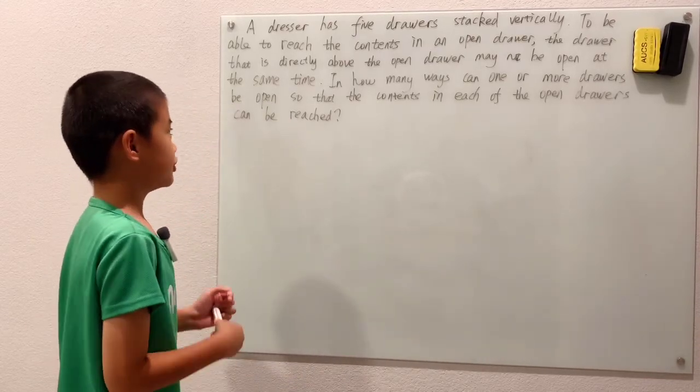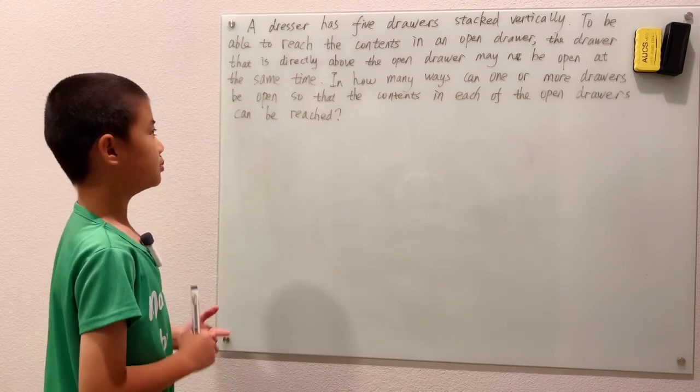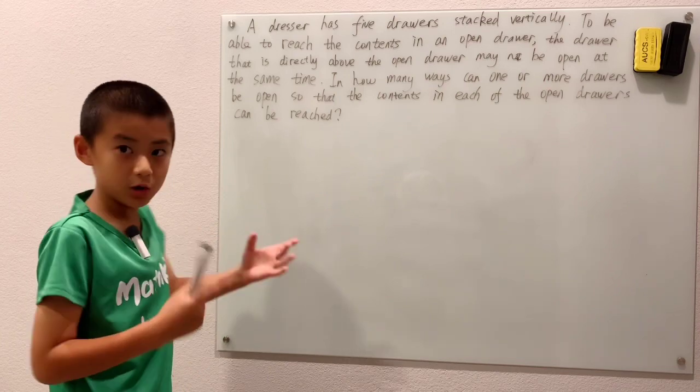A dresser has five drawers stacked vertically. To be able to reach the contents in an open drawer, the drawer that is directly above the open drawer may not be open.